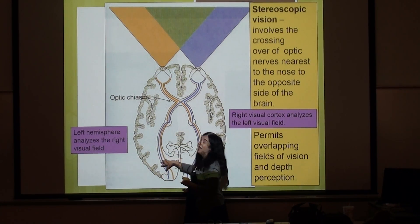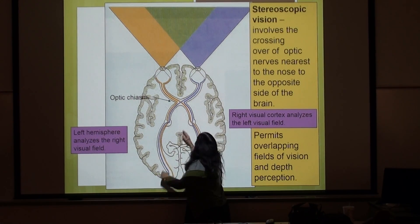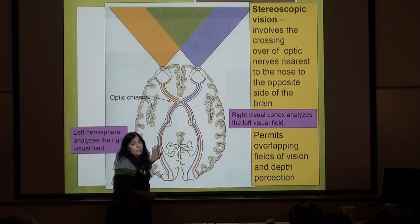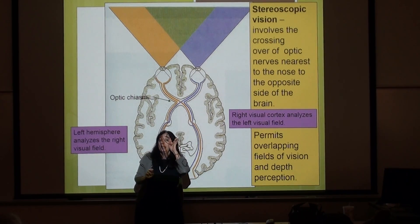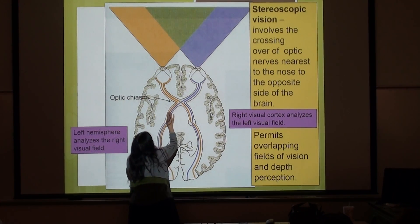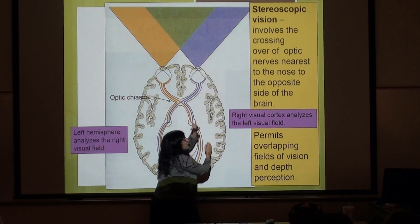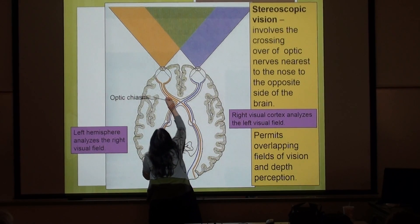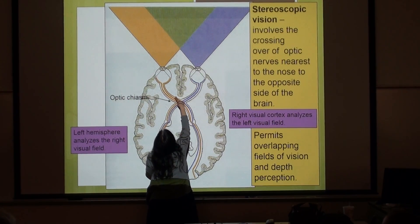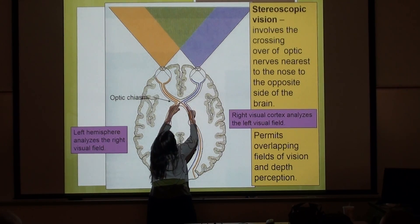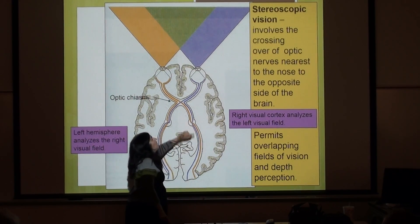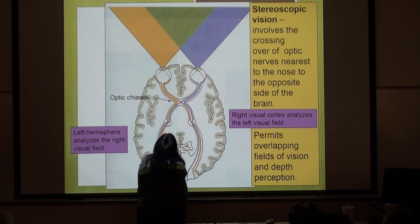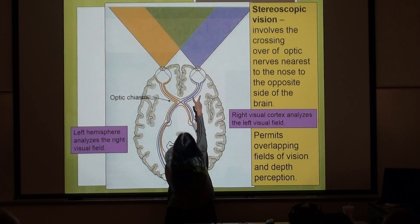Those nasal fibers go to the visual cortex on the left side of the brain. On the other side — my left eye — the opposite happens. What's on the outside of my left eye, those nerves stay on the left side. But the fibers on the inside, near the nose, are the ones crossing over at the optic chiasm to the opposite side of the brain. They're trying to show you the visual fields — if I only have my right eye, my right eye sees what's in that purple visual field.